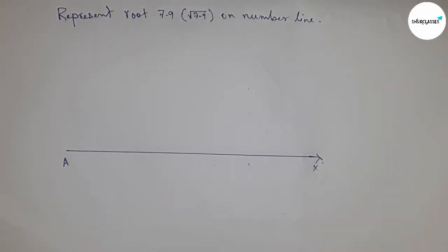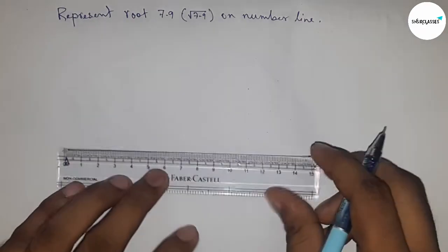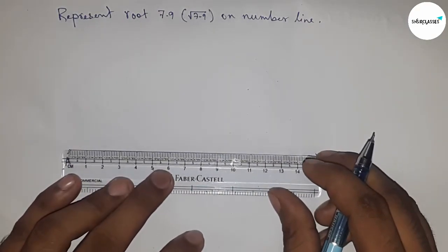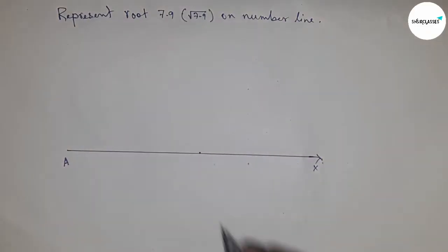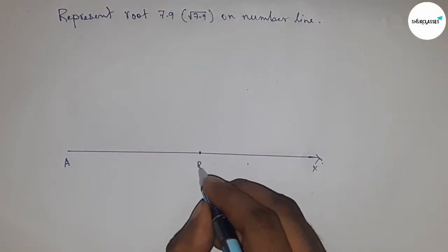Next, take a length of 7.9 centimeters. So taking this as point B, AB equals 7.9 centimeters.